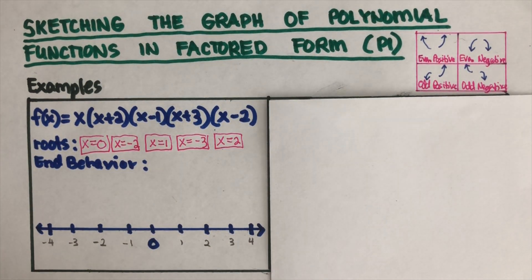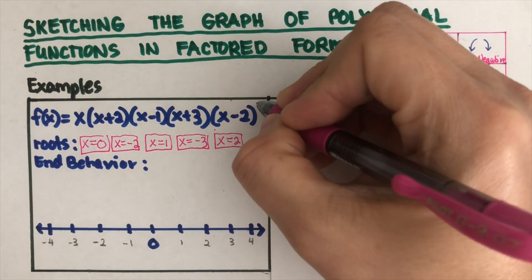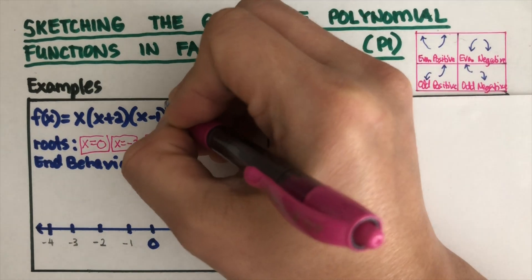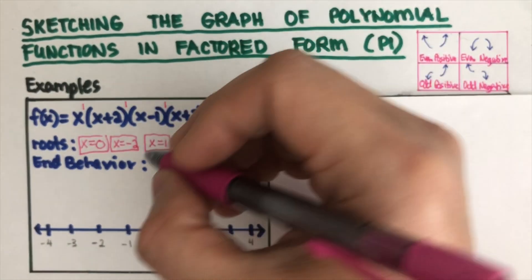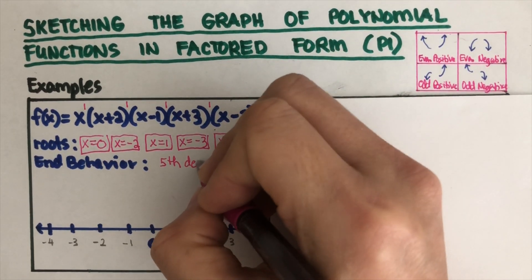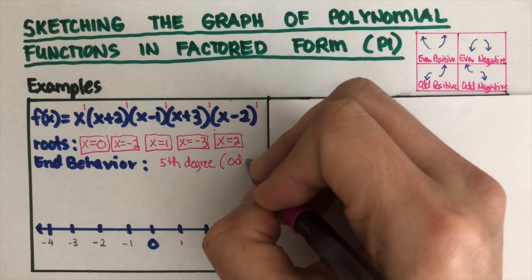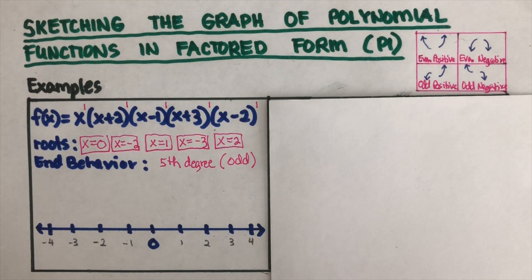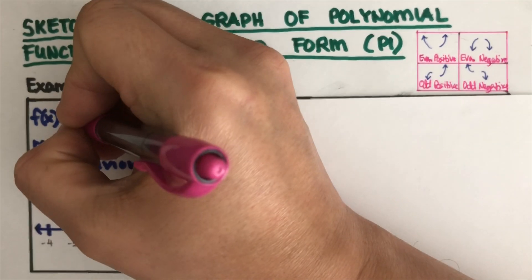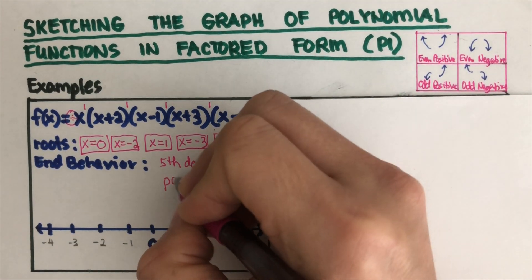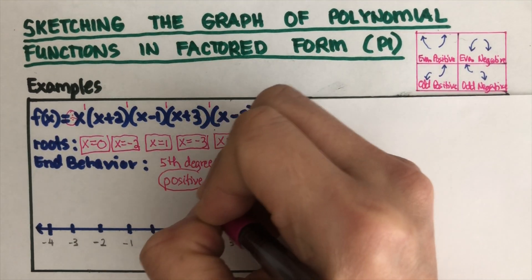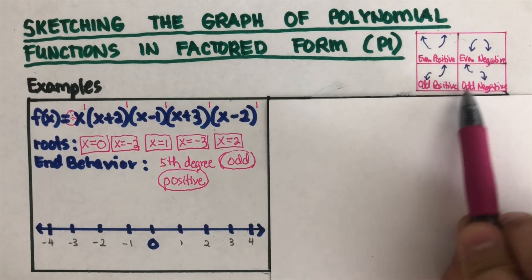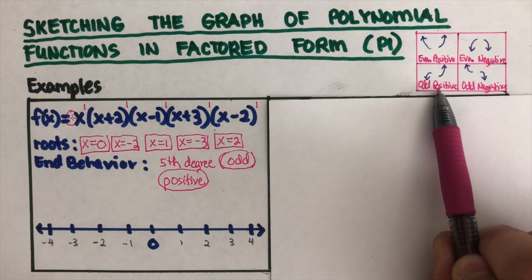Now let's look at the end behavior of the graph. First, let's determine the degree. Each of these parentheses has an exponent of one, including this one, so we count: one, two, three, four, five — this is fifth degree, which is odd. The leading coefficient is the invisible positive, so this is an odd positive graph.